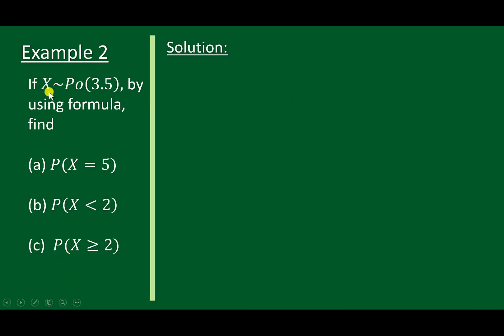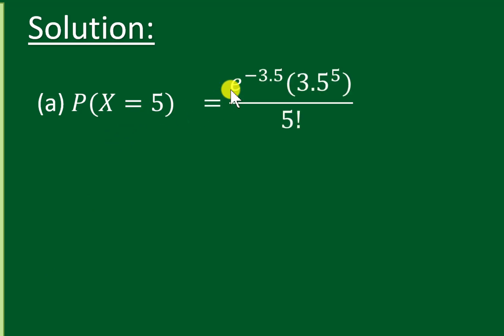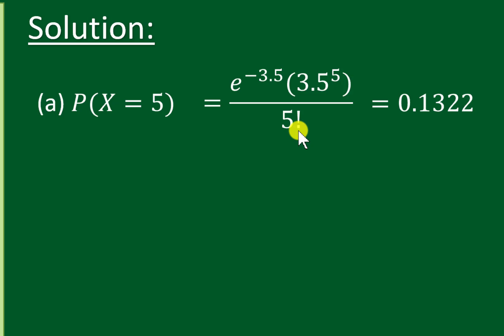Example 2: if x is distributed Poisson with lambda 3.5, find the probability that x equals 5 using the formula. The formula is exponent to the power of negative lambda multiplied by lambda to the power of x divided by x factorial. After calculating, the answer is 0.1322.